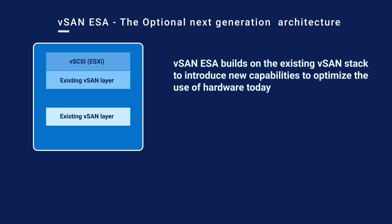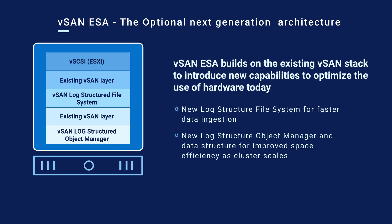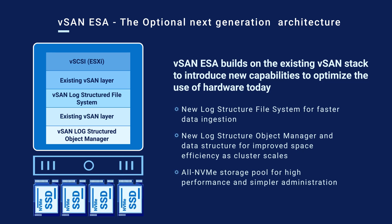vSAN ESA builds on the existing vSAN stack to leverage the powers of multi-core, higher memory, and NVMe technology to introduce new capabilities. The new Log Structured File System allows for faster ingestion of VM data to eliminate the trade-off of performance for space efficiency and security when compression and encryption data services are enabled. The new Log Structured Object Manager and Data Structure introduces adaptive data resiliency that maintains storage policy settings while looking to improve space efficiency as a cluster node count scales up or down. An all-NVMe storage pool simplifies storage device management for performance and workload balance while significantly cutting down the performance impact of an individual failed storage device.